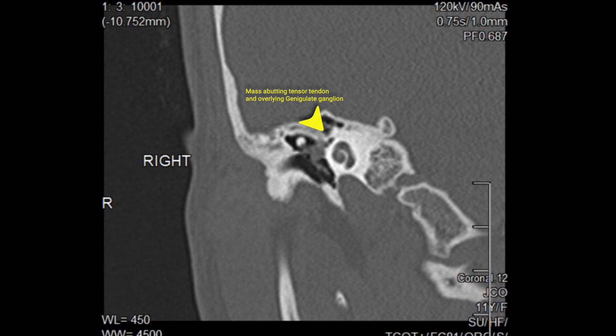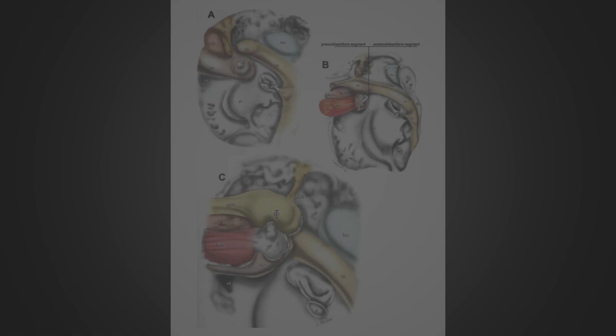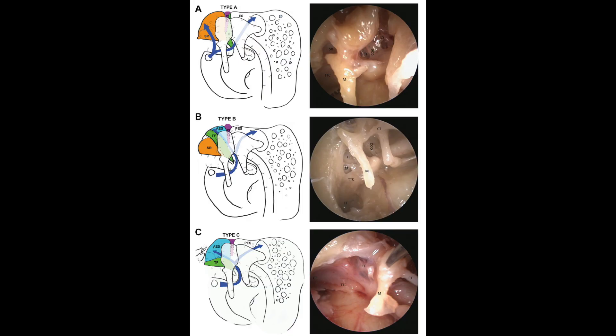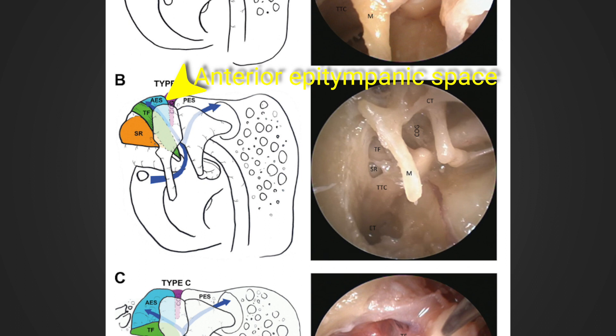The tympanic segment of the facial nerve was first described endoscopically by Professor Marchioni in 2011, and here we're studying the pre-cochlear form segment. Lyon and co-authors in 2018 further subdivided the tensor fold into types A, B, and C. Here we'll study a type B, with the anterior epitympanic space above and the super tubal recess below.